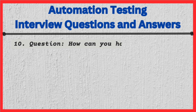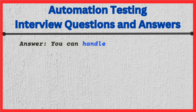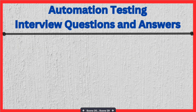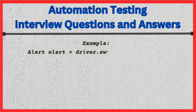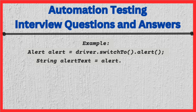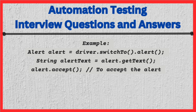Question: How can you handle alerts in Selenium? Answer: You can handle alerts using the Alert interface. Example: Alert alert = driver.switchTo().alert(); String alertText = alert.getText(); alert.accept(); // to accept the alert // or alert.dismiss(); // to dismiss the alert